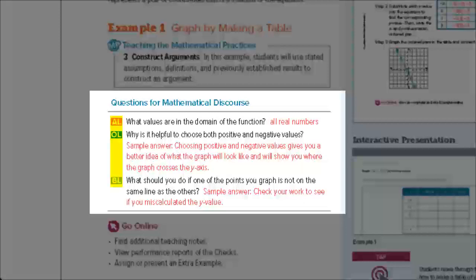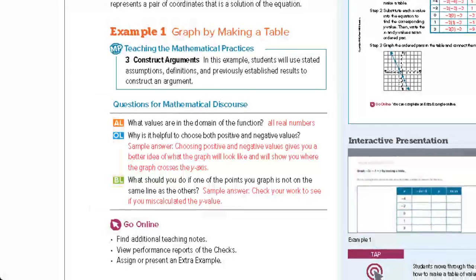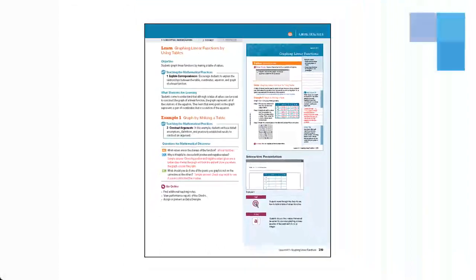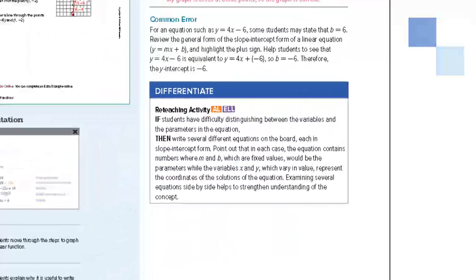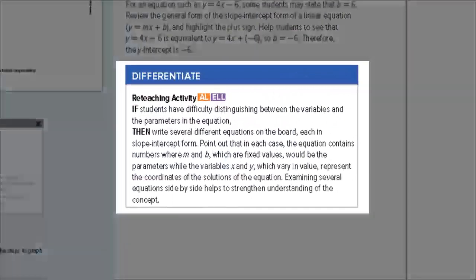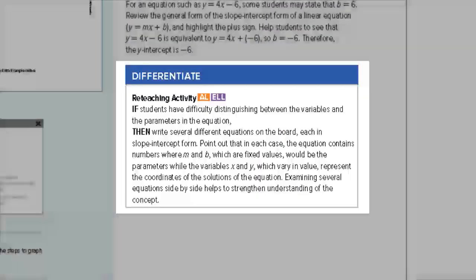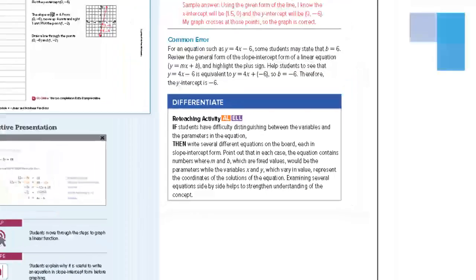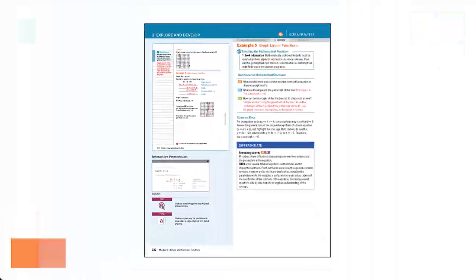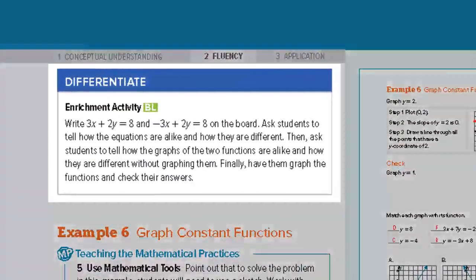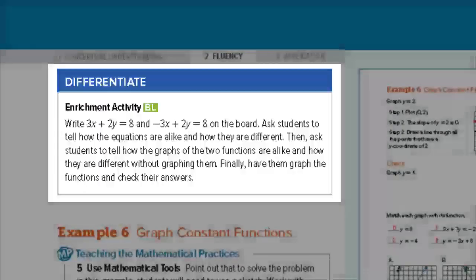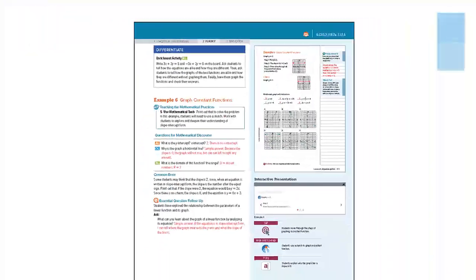AL is for approaching level, OL is for on level, and BL is for beyond level. You'll also find that throughout each lesson in the teacher edition are reteaching and enrichment activities. Reteaching activities are provided for students who may need to see a concept in a different way or practice their prerequisite skills, whereas enrichment activities give students an opportunity to further their understanding during the learn phase of the instructional model.